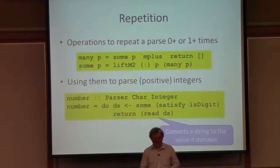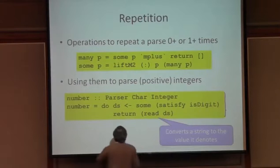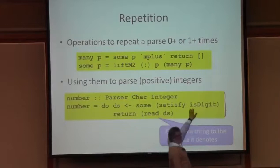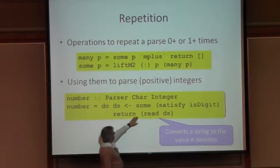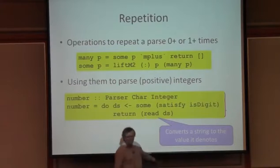Some P can be defined just to parse a P and then many P, and combine them using cons. So I can use the liftM2 function for doing that. And now here is my first actual parser. This parses a positive integer by saying: let's parse one or more characters that satisfy the isDigit predicate — so one or more digits — and then return not the list of digits but the integer that those represent. The read function is a Haskell library function that can convert a list of digits to a number.